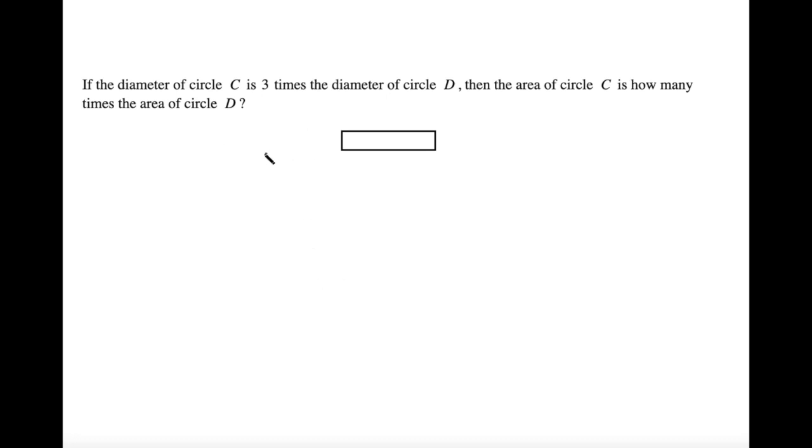Well, this problem is extremely vague. It gives us no specific values for C or D. The only thing that we know is that the diameter of this circle is three times larger than the diameter of that circle. And this vagueness is great for us because it allows us to just pick our own numbers, test the case and see what's true.